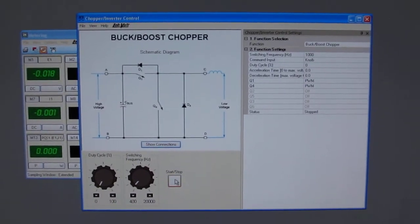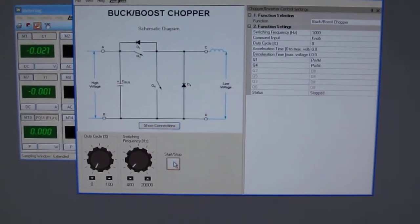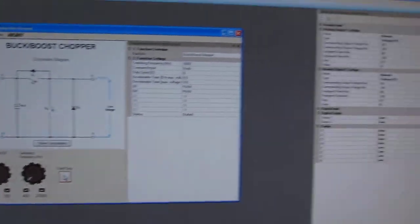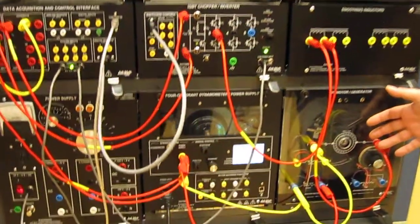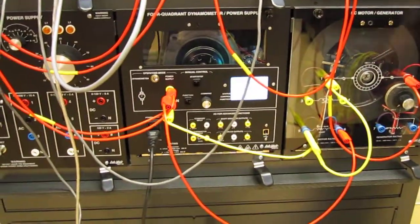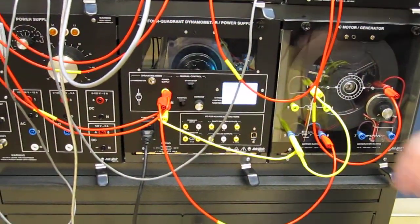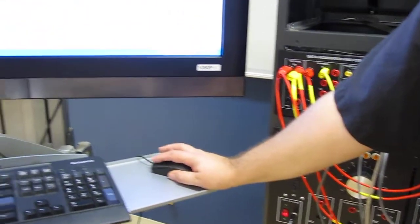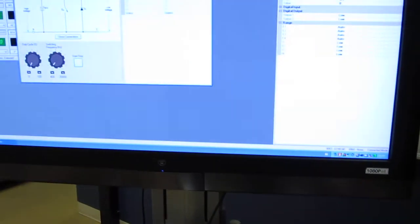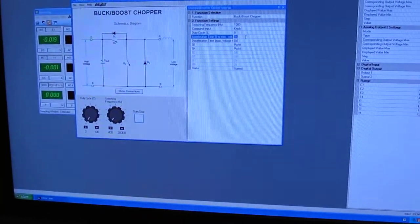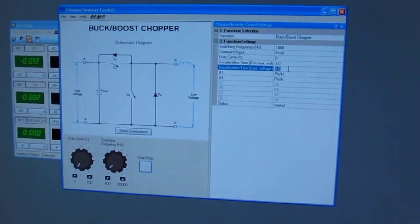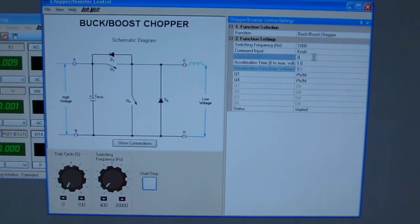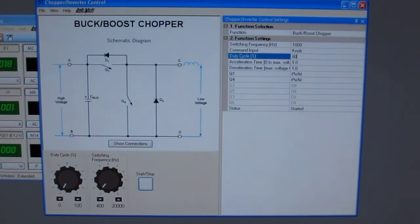So when I press start on that and start on the power supply, right now I have no speed at all because my duty cycle is at zero. So let's say I want to go to a duty cycle of—I'll give it some acceleration and deceleration time, let's say one second for acceleration and deceleration. So I go to a duty cycle of 80%.